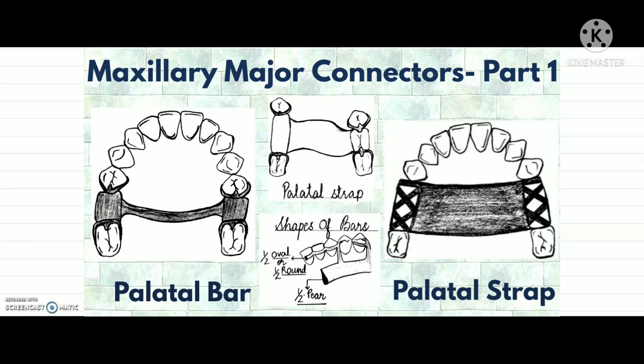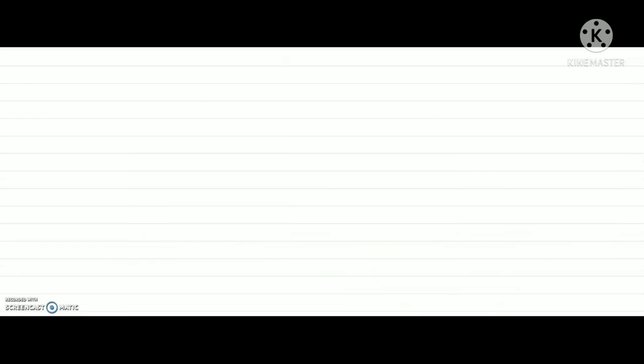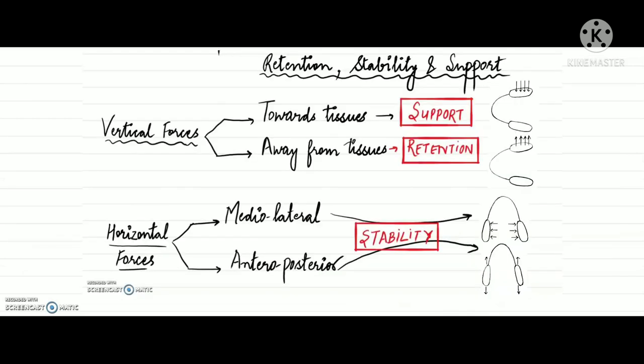Today's video is about maxillary major connectors. Before starting, make sure that you are aware of Kennedy's system of classification and understand the basic difference between retention, stability, and support. I have already made detailed videos on these topics — links are provided in the description box below. But for now, I will give you a quick overview so it will be easy to understand today's topic of maxillary major connectors.